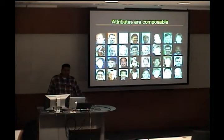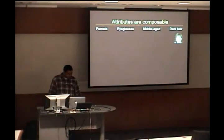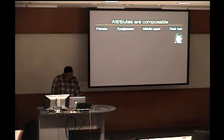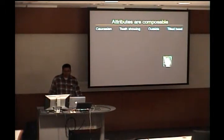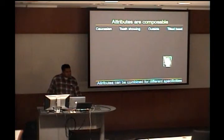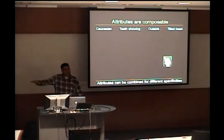The second thing is that attributes are composable. If you have a number of faces and want to describe different categories of people, you can describe a very general category of all females, or you could add more attributes together to describe more and more specific categories. You can use four attributes together to get down to just one person out of the 30 that we started with. You can not only describe categories or classes of objects, but even specific instances — saying Caucasian people with teeth showing, with a tilted head, to describe a specific image. Attributes can be combined for different specificities — the same framework, just adding more attributes.